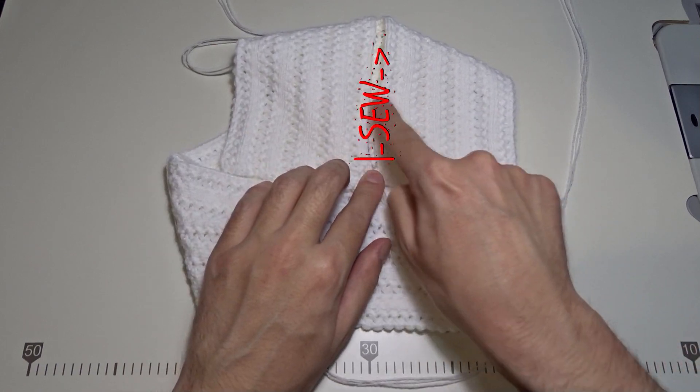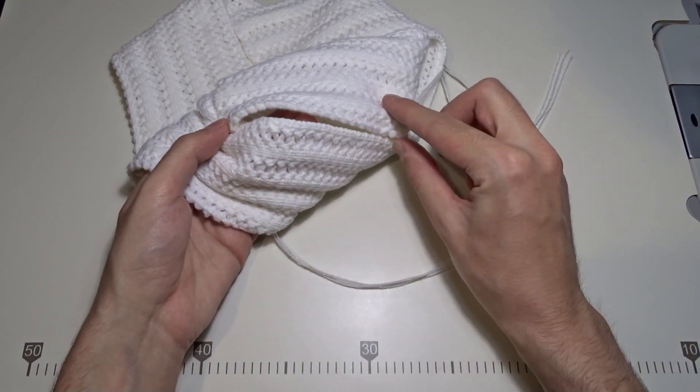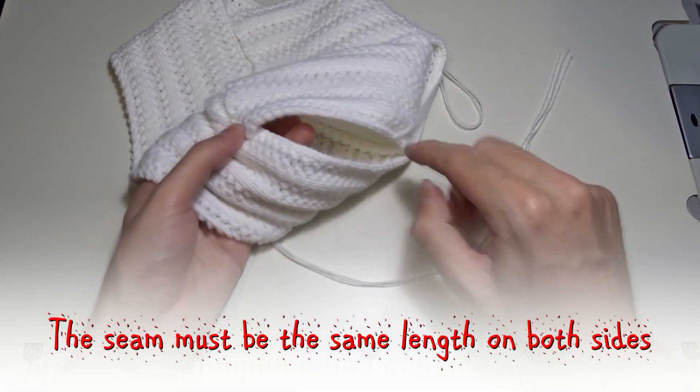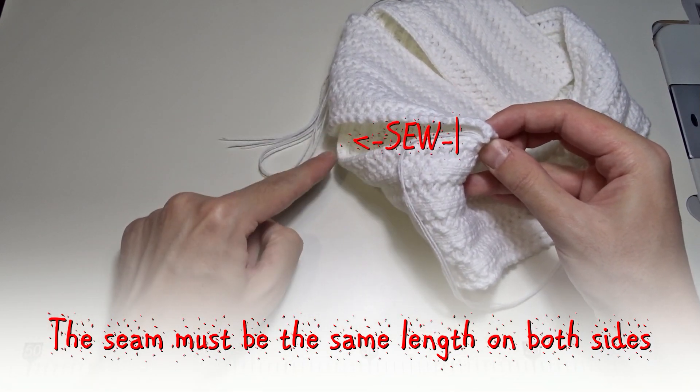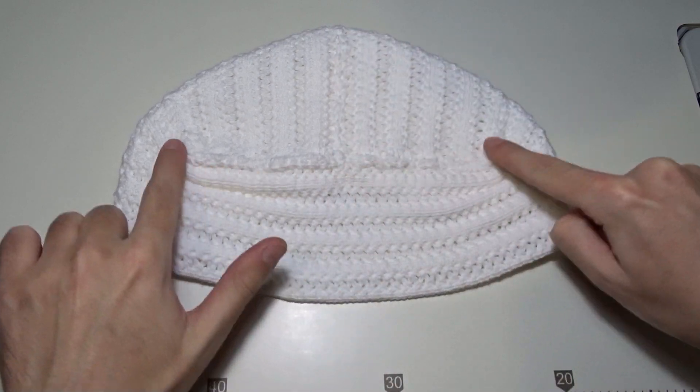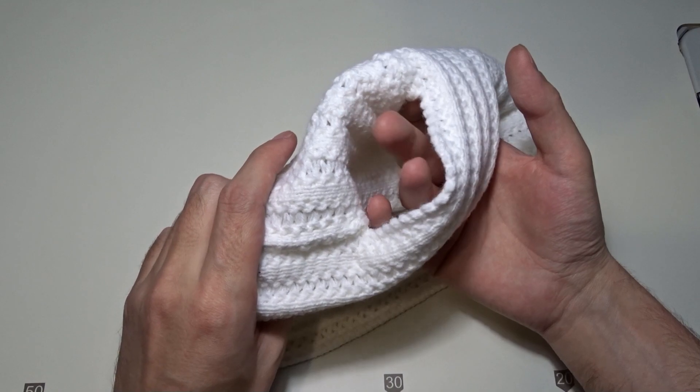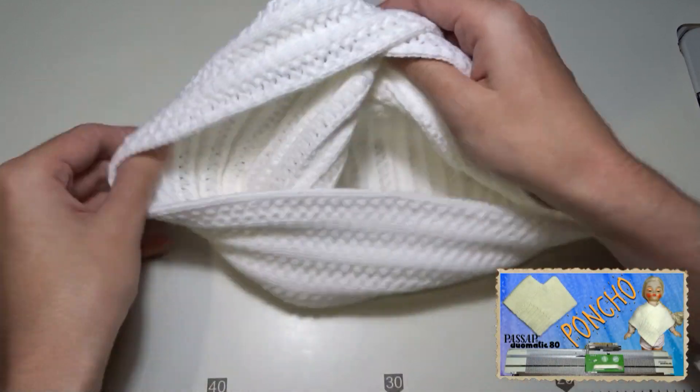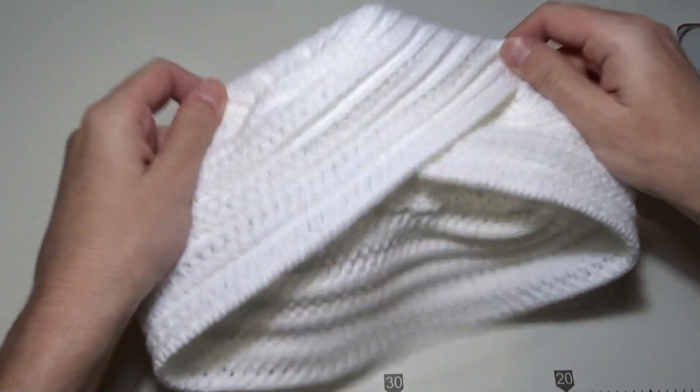It should look like this. If you make an invisible seam, you may wear it on both sides. That is how it looks on the other side.